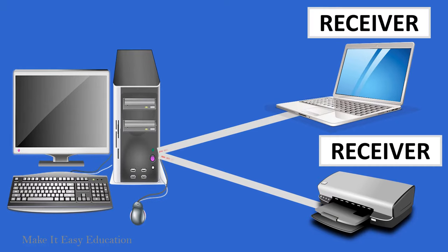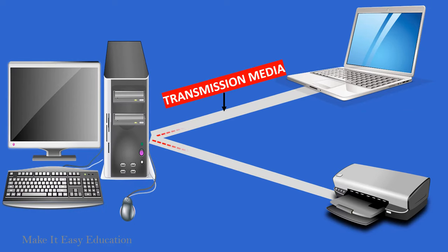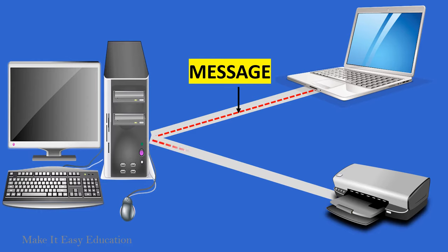A receiver is the device which is expecting the data from another device on the network. In order to transfer data from one device to another device, we need a transmission media such as wires, cables, etc. Message is the data or information which needs to be transferred from one device to another device over a computer network.